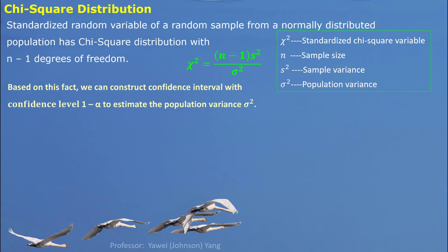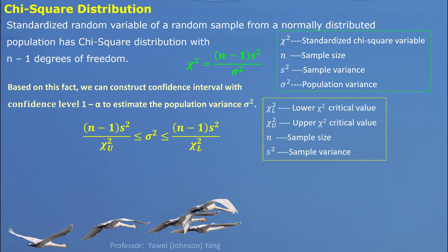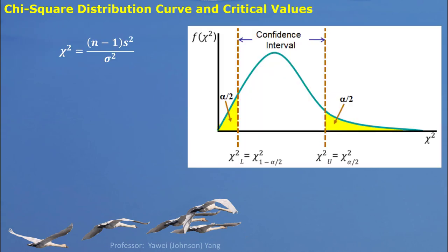Based on this chi-square sampling distribution, we can construct a confidence interval with confidence level 1-alpha to estimate population variance sigma. It's like a mathematical expression being rearranged. This is the confidence interval. Chi-square U is on the right side, called the upper chi-square critical value. Chi-square L is on the left side, called the lower chi-square critical value. They can be conveniently found using the chi-square statistical function in Excel. From this chi-square expression, we can see only positive values are possible for this chi-square random variable. The corresponding distribution curve is shown in the chart.